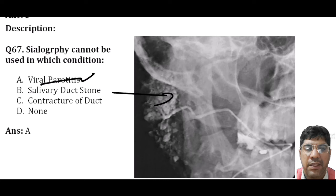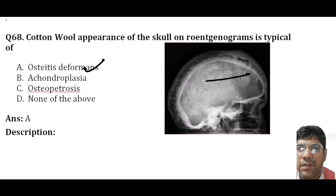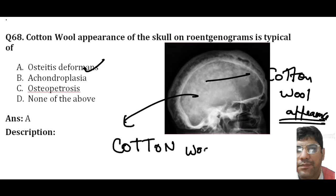The cotton wool appearance on the skull is typical of osteitis deformans (Paget's disease). This cotton wool appearance is seen in Paget's disease due to disorganized bone remodeling that leads to thickening and softening of the bone.